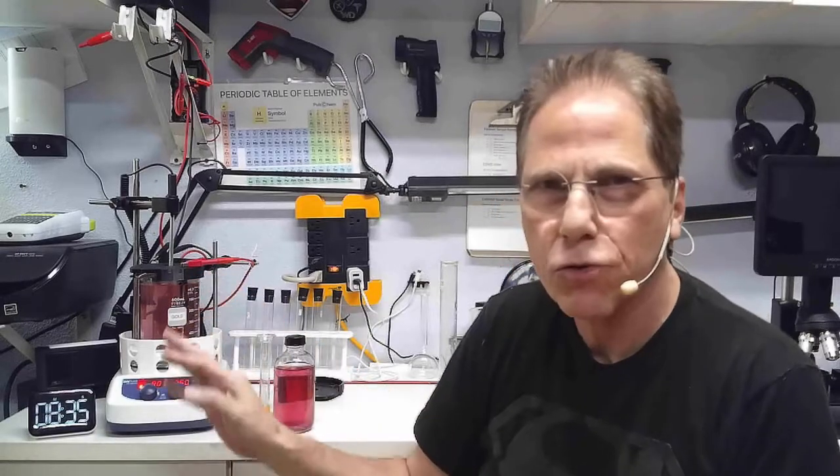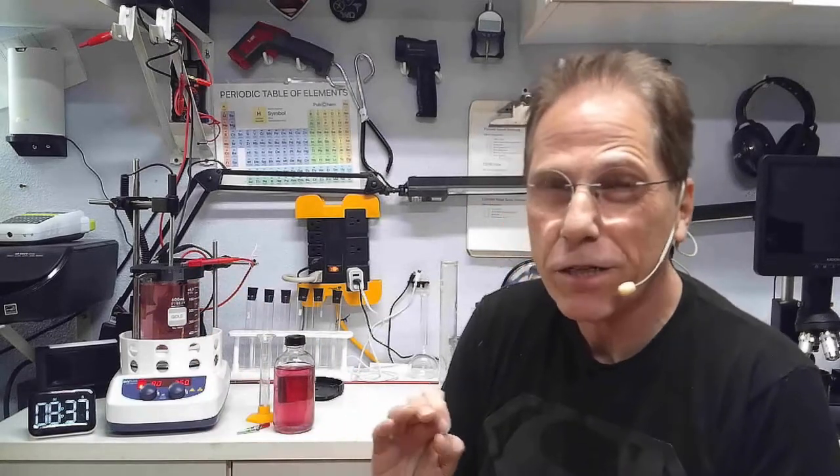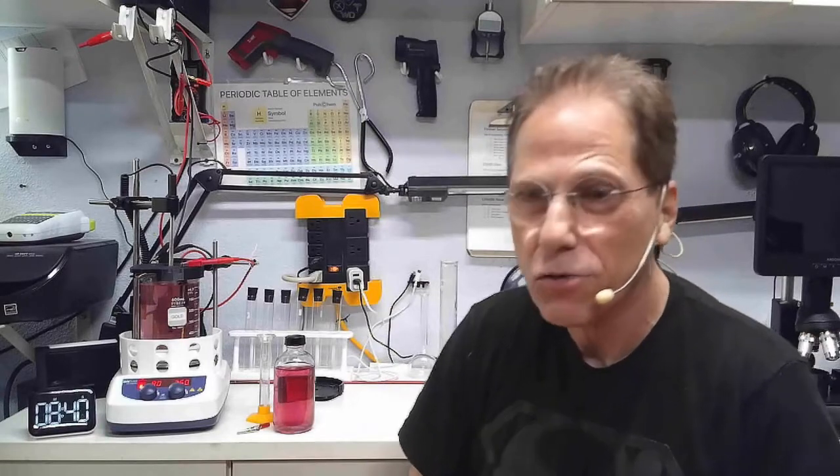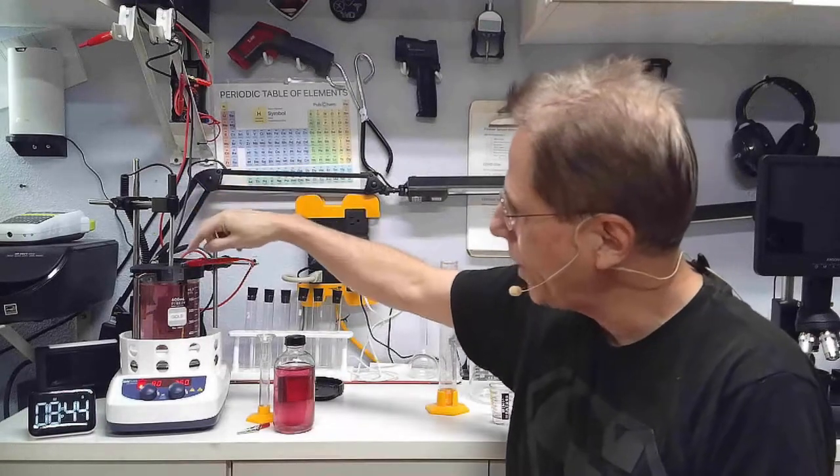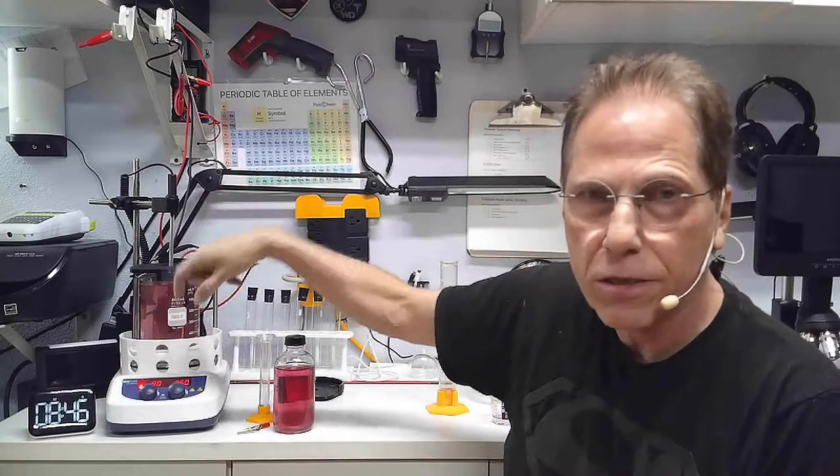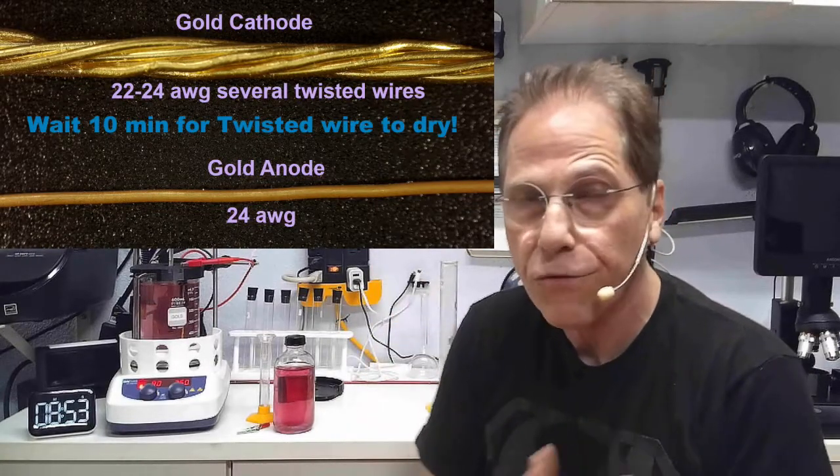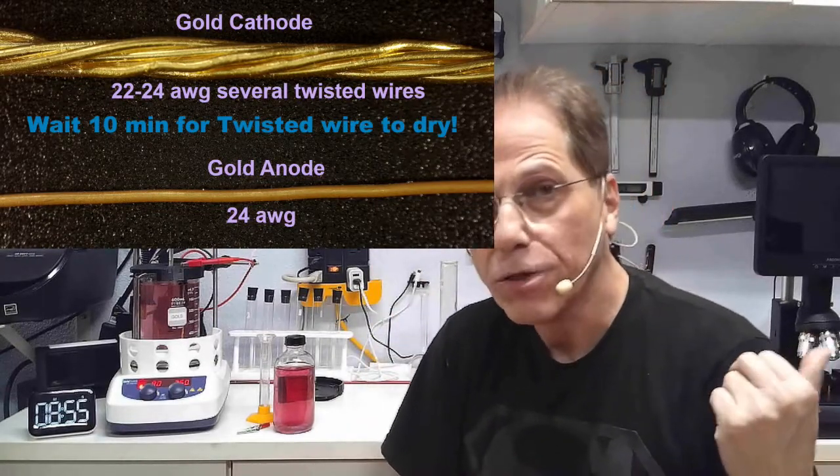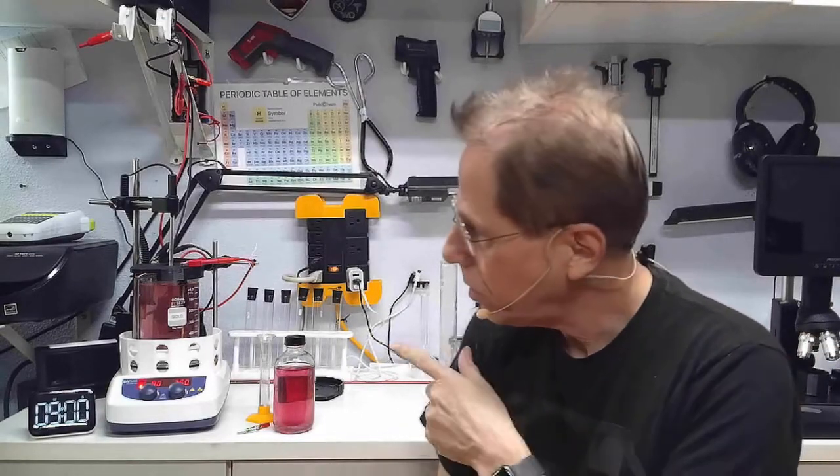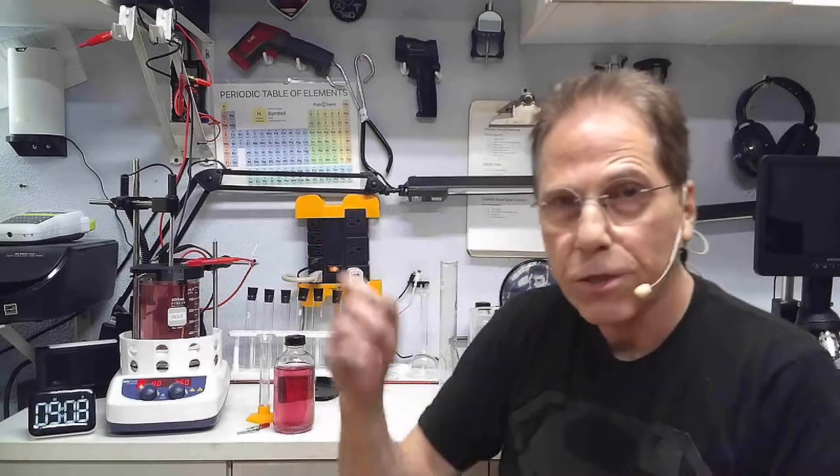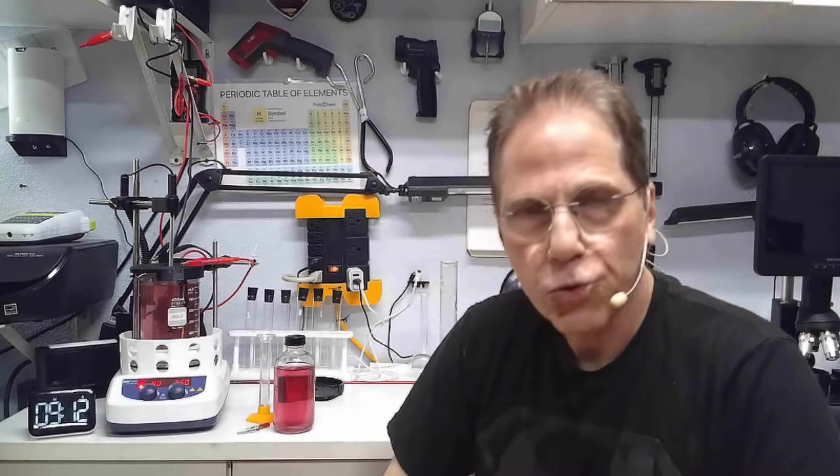Keep in mind, if you're using twisted gold wire, you have to wait for the water to dry out in between the twisted gold wire before you're going to get an accurate weight measurement. They will always weigh heavier with the water in between the twisted gold wire. You need to let it dry up before you can get an accurate measurement.